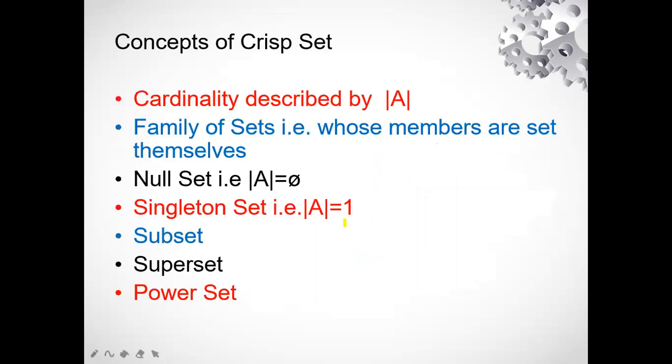So basic agenda of telling you all these things is that why we are calling this classical set theory as crisp set. We are calling it as crisp set because we have only the two values that is zero and one. There is nothing in between. There is no other information in between. We only have two values which are the boundaries of this concept. So that is why this is called as crisp sets. Now crisp sets in this we have certain concepts. This is termed to be as cardinality. Family of sets that is whose members are set themselves. Null set that means which have null value. Singleton set means it has only one element in the set. Subset and superset. Superset is the one which is having the elements of all these sets. Subset, the one which is having similar values is the subset.